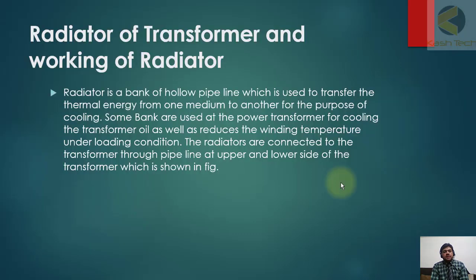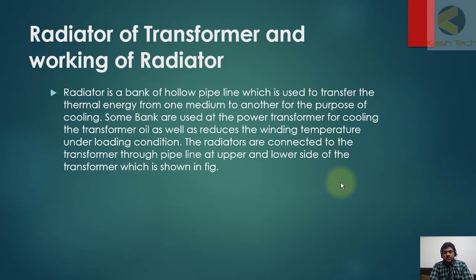Welcome back. We move to the next topic: radiator of transformer and working of radiators. The radiator is a bank of hollow pipelines which is used to transfer the thermal energy from one medium to another for the purpose of cooling. Some banks are used at the power transformer for cooling the transformer oil as well as to reduce the winding temperature under loading condition.